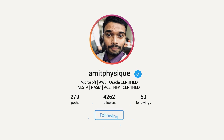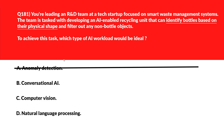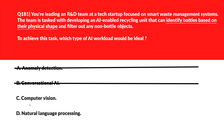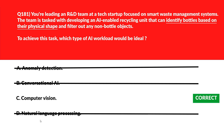Option B says conversational AI — conversational AI interacts through speech or text and doesn't help detect object shapes, so it's incorrect. Option C is computer vision — computer vision analyzes visual data and can enable recognition of bottle shapes, so let's keep it. Option D is natural language processing — NLP isn't meant for object filtering, especially for bottles. It has nothing to do with visual recognition, so option D is wrong. We'll lock option C, computer vision, as the right answer.